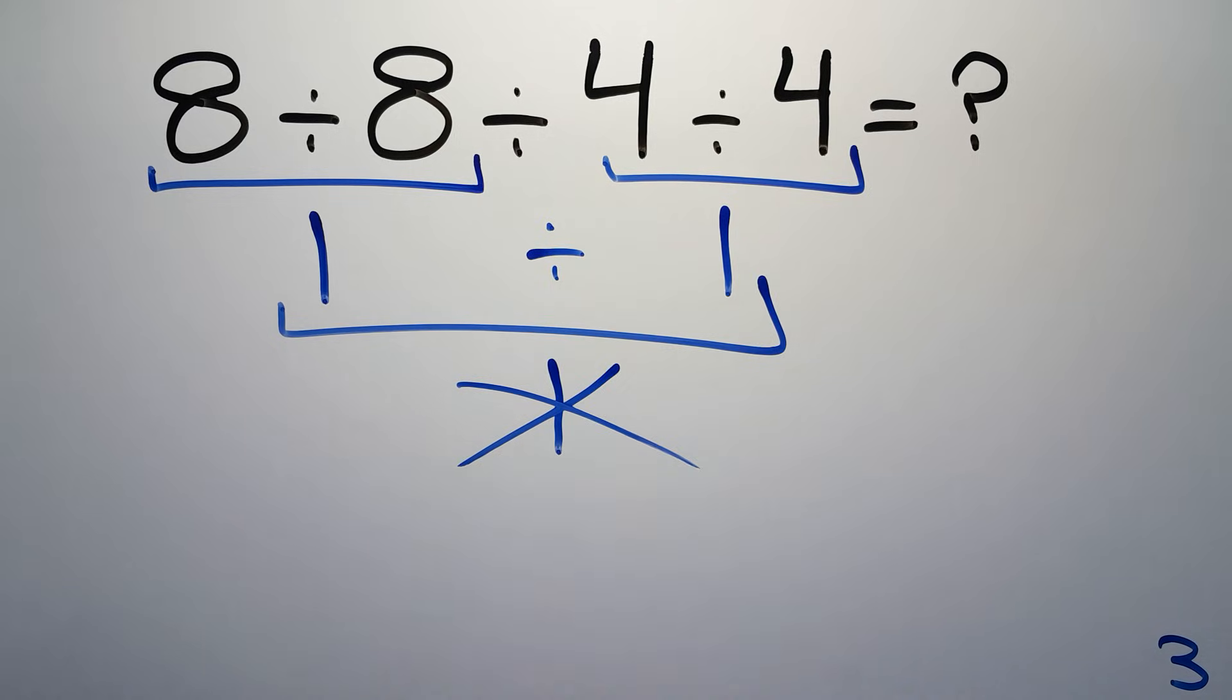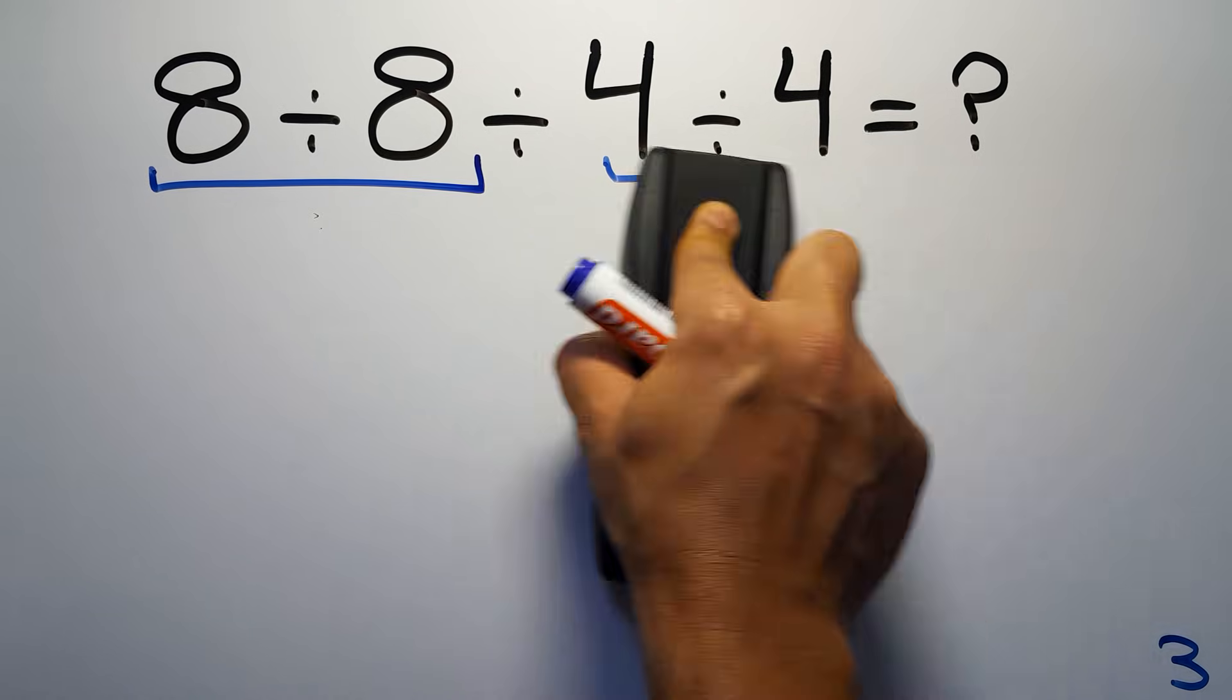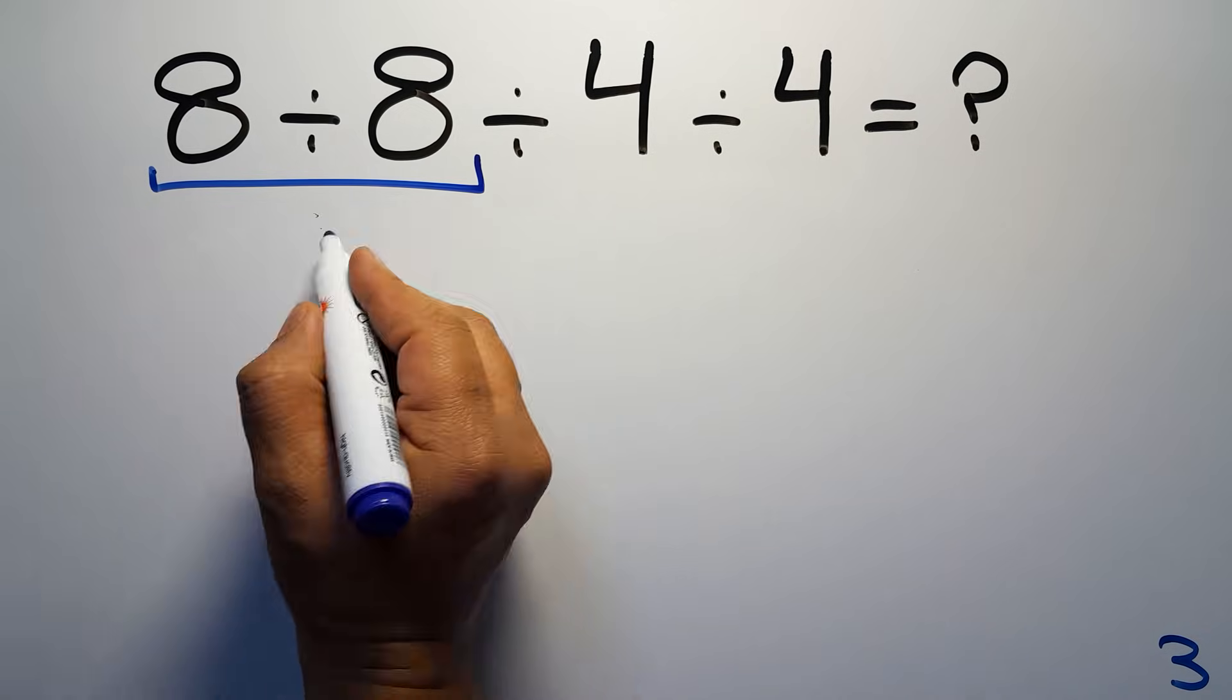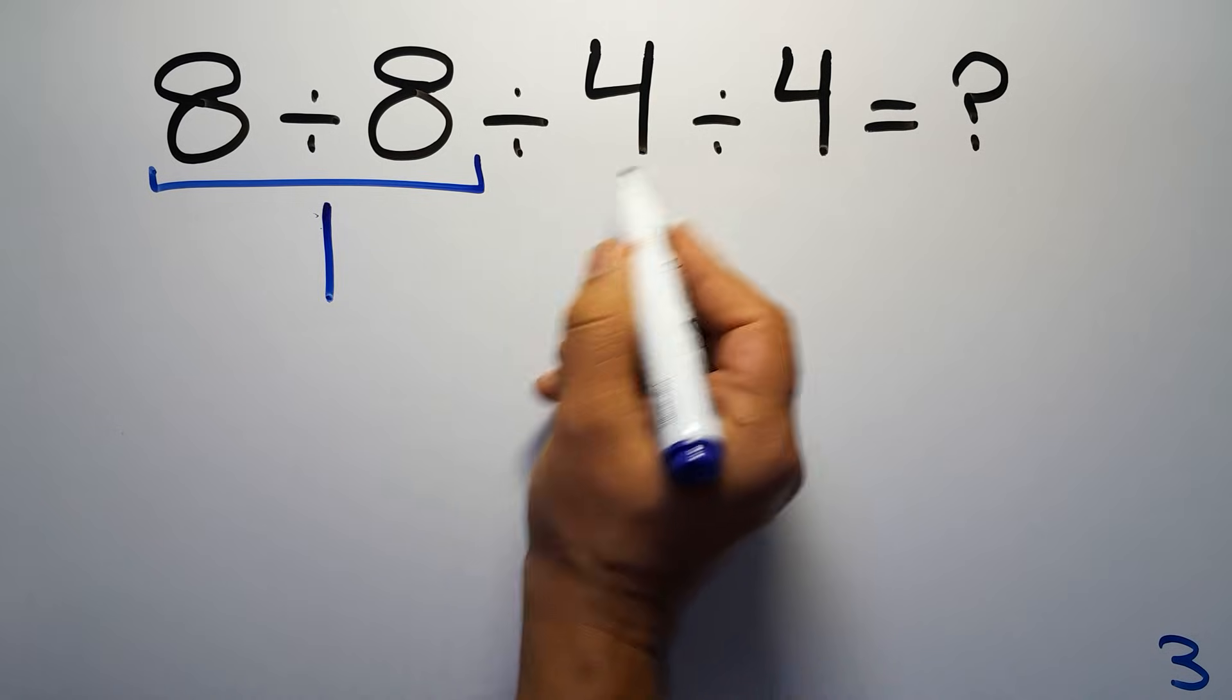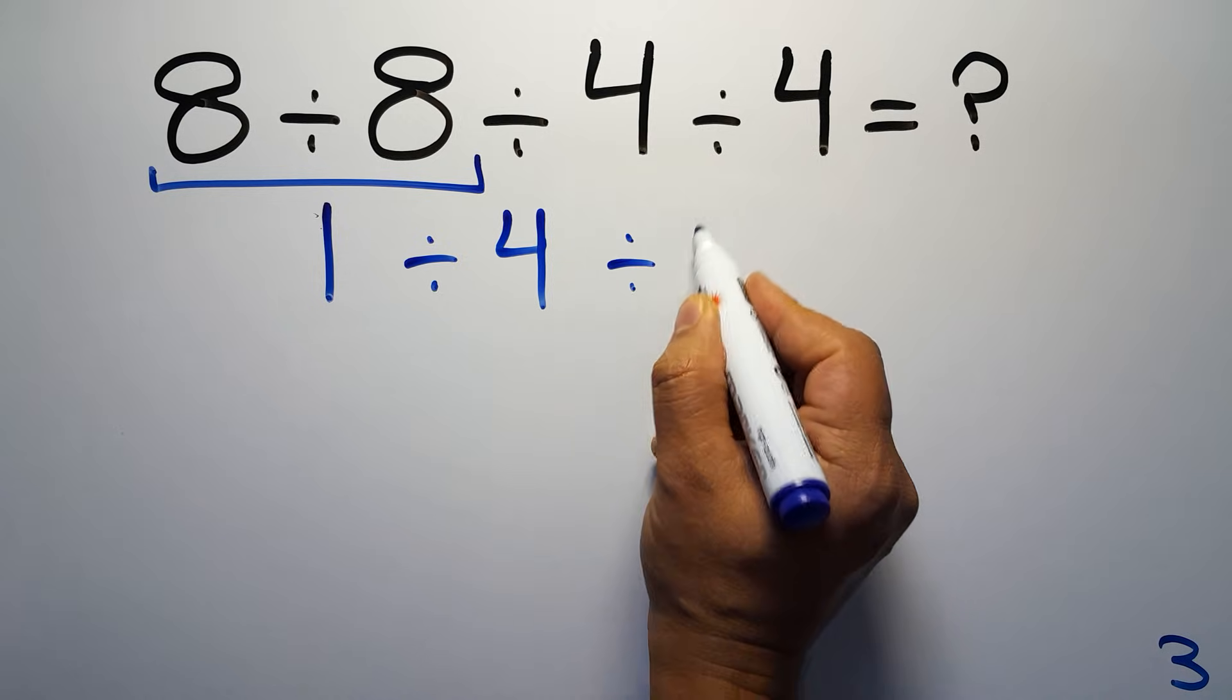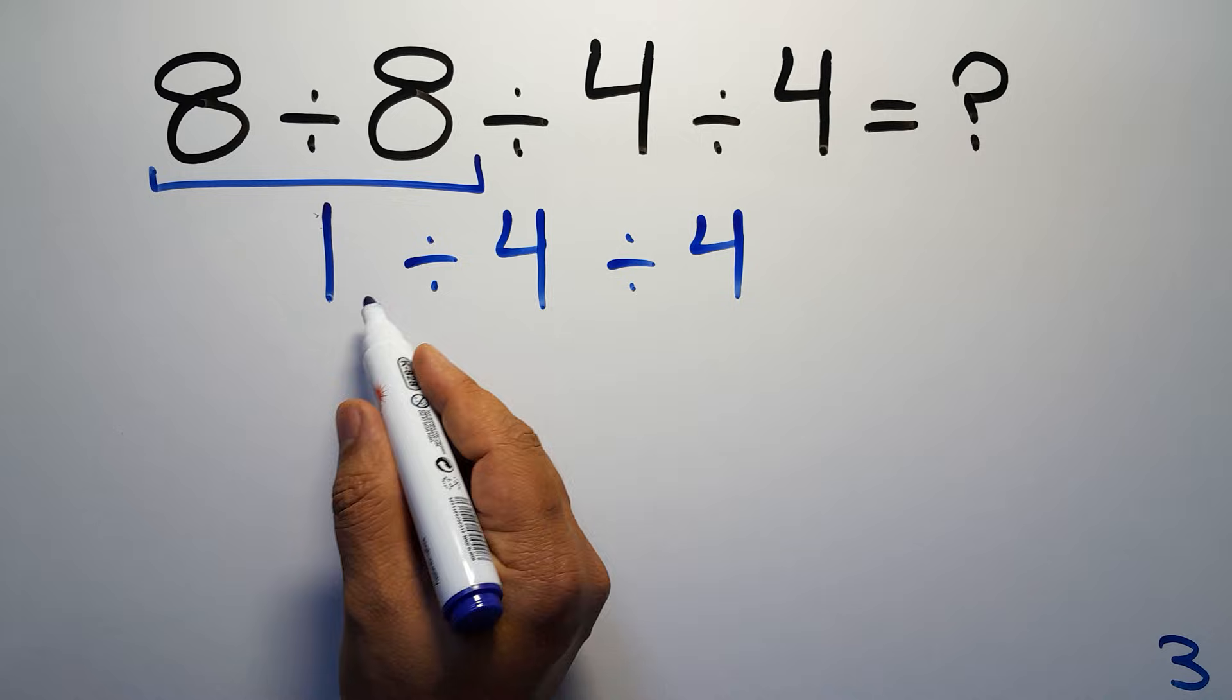So first we have to do this division: 8 divided by 8 is just 1. So 1 divided by 4 and again divided by 4. Now we have two divisions, and when we have more than one division in an expression, we have to work from left to right.